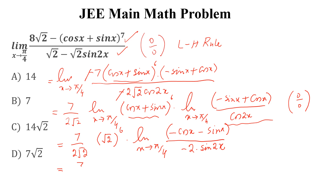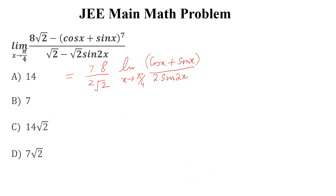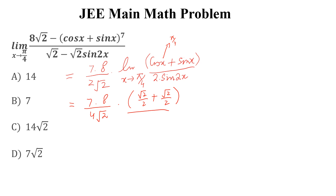Simplifying further: 7 divided by 2*sqrt(2), and (sqrt(2))^6 equals 8, so we have 7 divided by 2*sqrt(2) times 8, times the limit x approaches pi by 4 of (minus cos x plus sin x) divided by (minus 2*sin(2x)). The minus signs cancel, and putting x = π/4: cos(π/4) plus sin(π/4) equals sqrt(2)/2 plus sqrt(2)/2, and sin(2·π/4) equals sin(π/2) equals 1.